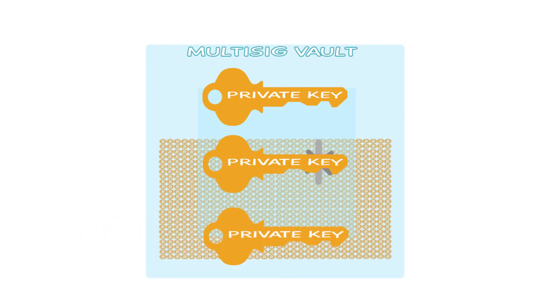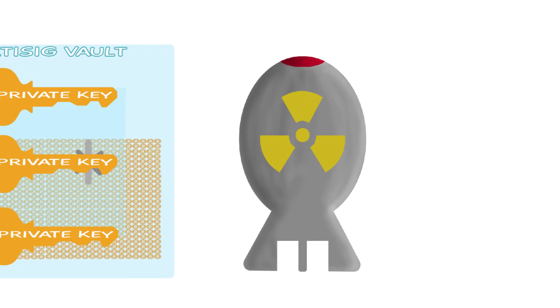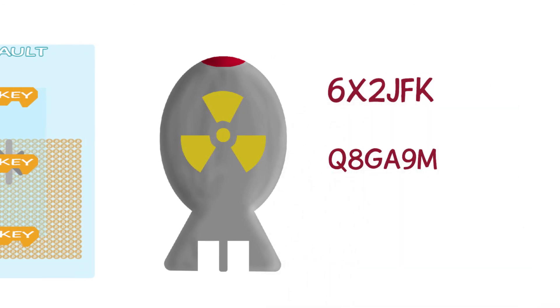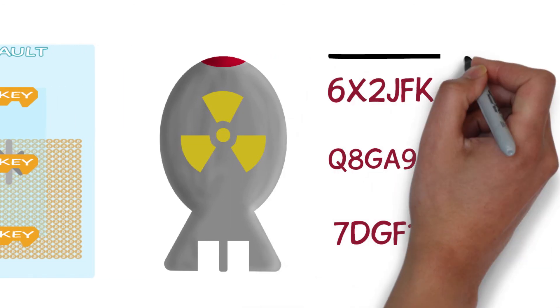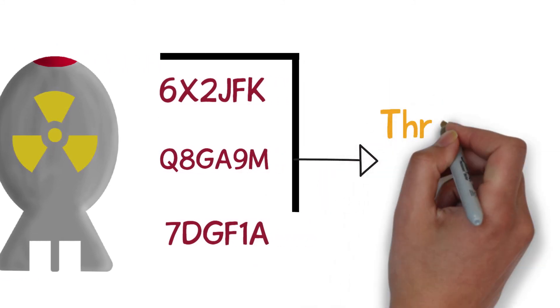There are also some vaults that require multiple keys to be unlocked. These are called multi-signature or multi-sig for short. This could be compared to launching a nuclear missile where the only way to fire it is if three different launch codes are provided. This scenario would be called a three out of three because you need all three available keys to activate the system.